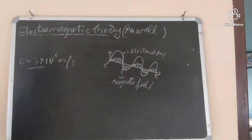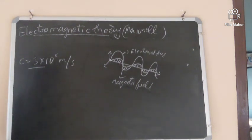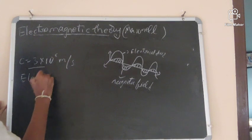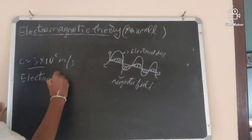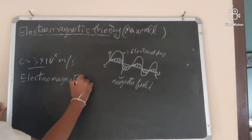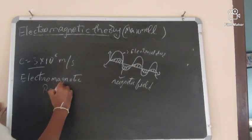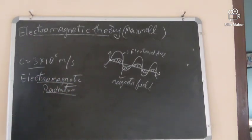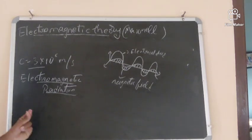According to electromagnetic theory, when an electric charge vibrates or accelerates, it produces two fields. They are both perpendicular to each other. This is called electromagnetic radiation. These electromagnetic waves which produce radiation are called electromagnetic radiation.